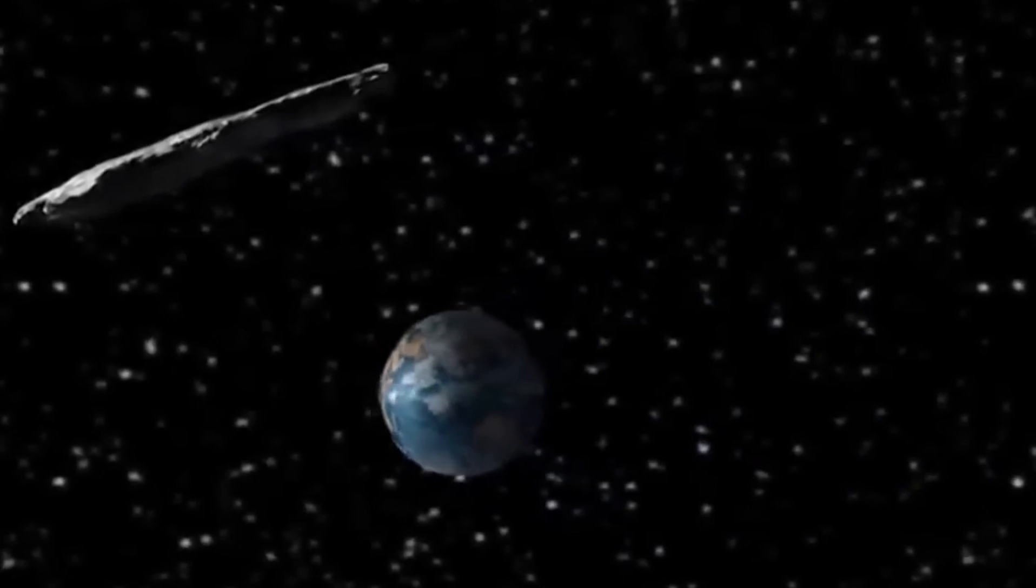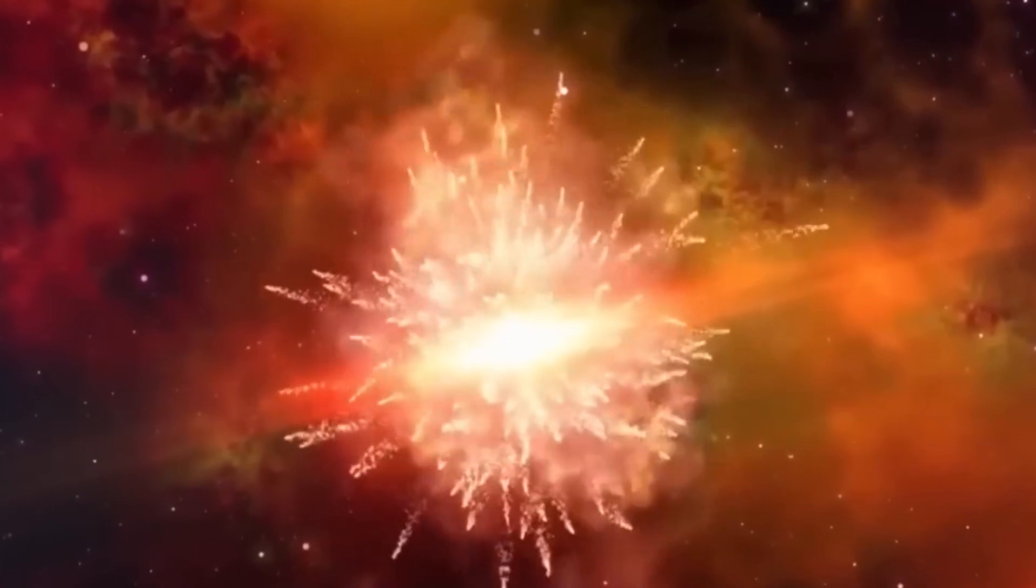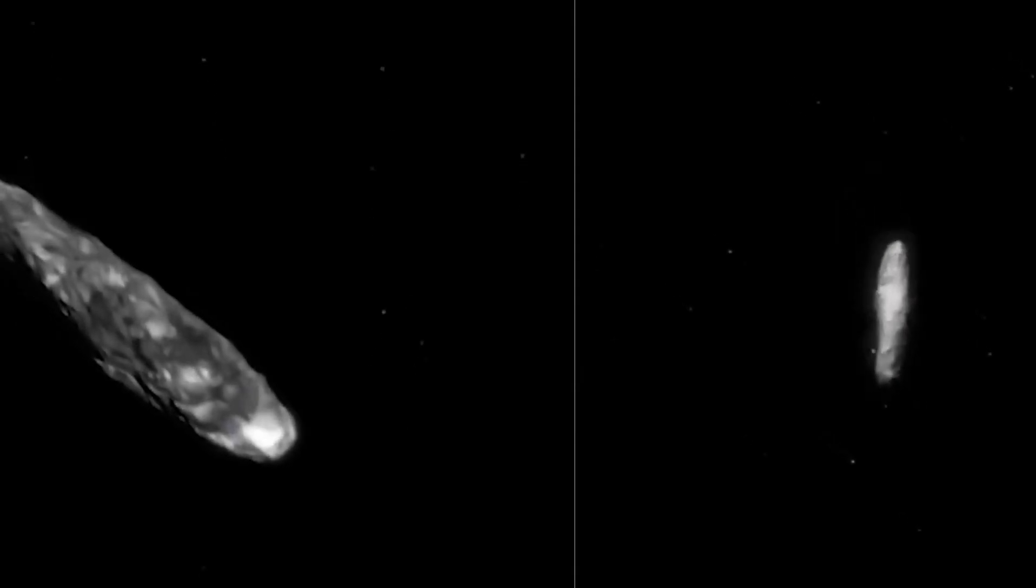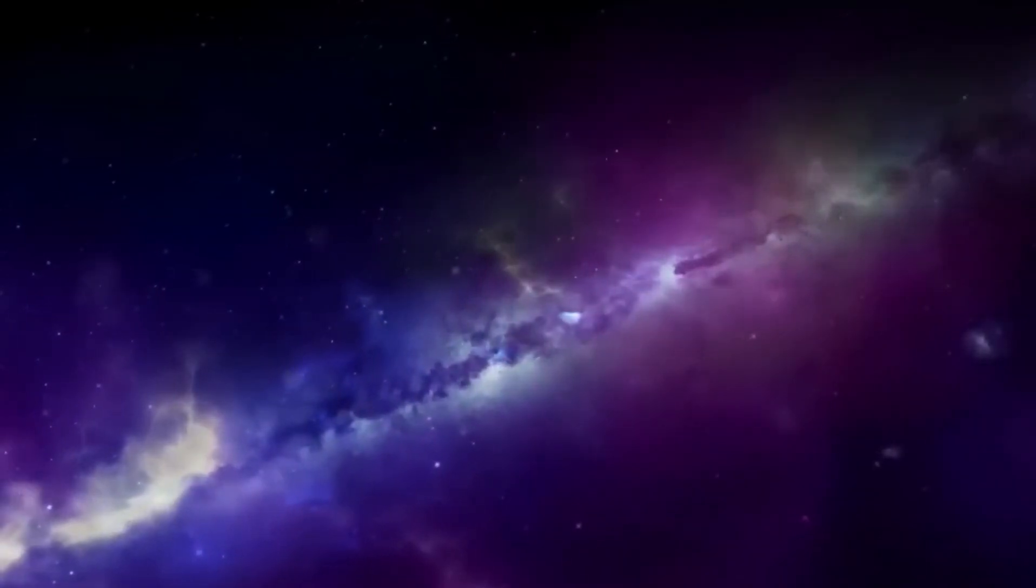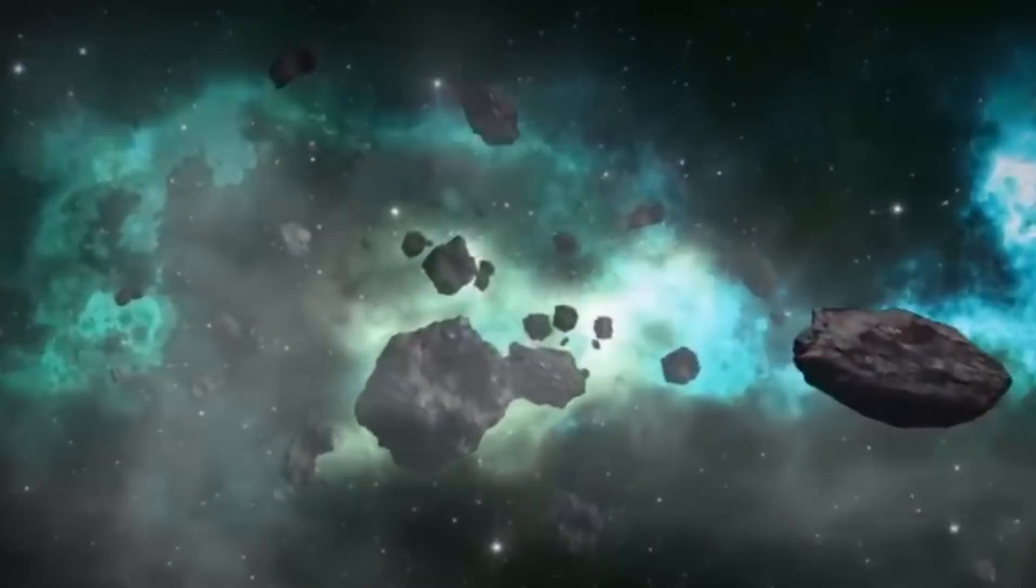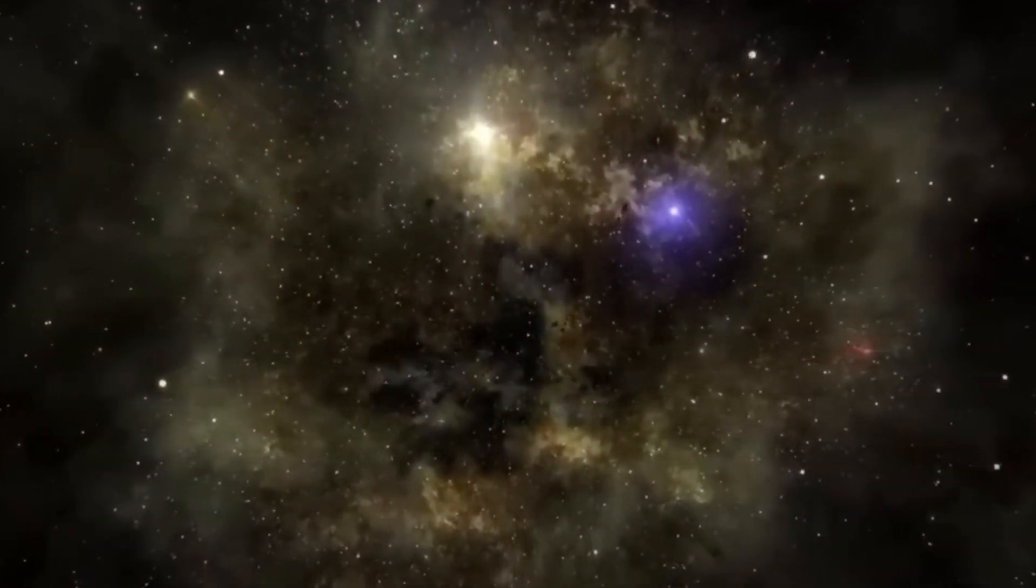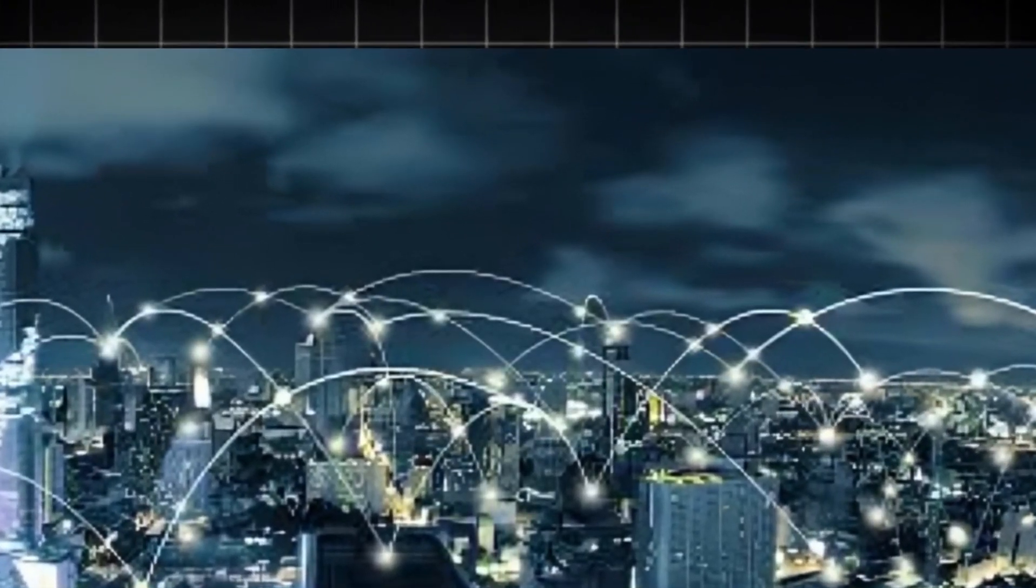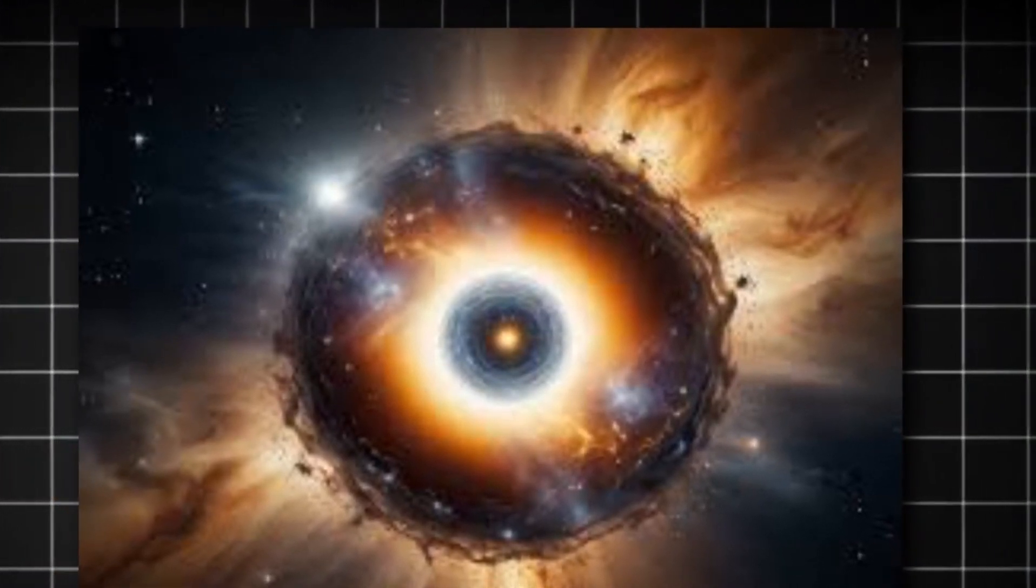The remarkable ability to observe Earendel at such a vast distance is largely due to the phenomenon known as gravitational lensing. This effect occurs when a massive galaxy cluster, situated between Earth and the distant star, acts as a gravitational lens. Essentially, the gravity of this galaxy cluster warps the fabric of space-time, bending and magnifying the light from Earendel. This magnification functions much like a cosmic magnifying glass, enabling astronomers to capture detailed images of this ancient star. Thanks to this gravitational lensing, JWST has managed to unveil Earendel's crimson rays with unprecedented clarity.